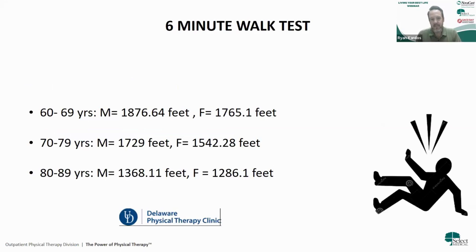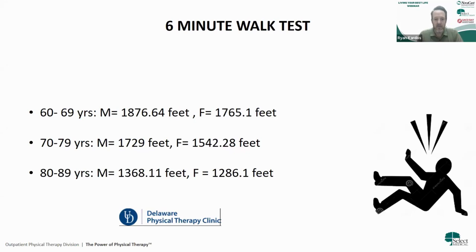Another test is the six-minute walk test — how far can you walk in six minutes using whatever assistive device you use. There are norms from the University of Delaware by age and sex. For example, a 60-year-old female should be able to walk 1,765 feet in six minutes. It's been interesting to see patients surprised by how long six minutes of continuous walking really is. Between ages 80 and 89, the expected distance drops to the high 1,200s to low 1,300s for males.